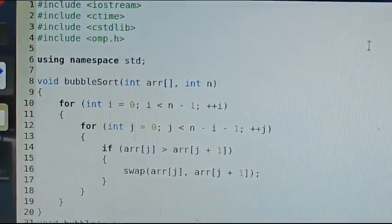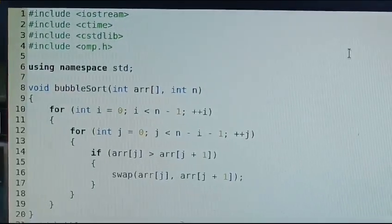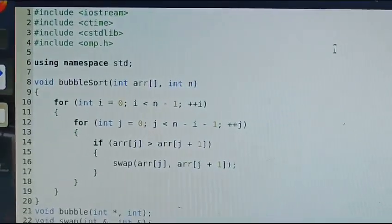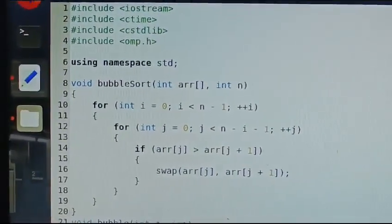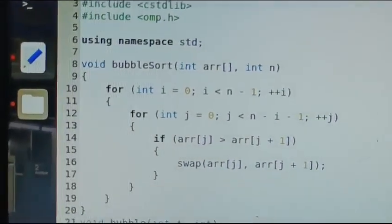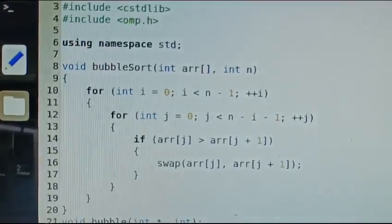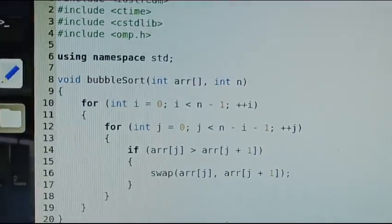Then we go for Parallel Bubble Sort and measure the execution timing. Same for Merge Sort. Hash include iostream, this is for input and output, then ctime header file for converting time, stdlib standard library function.